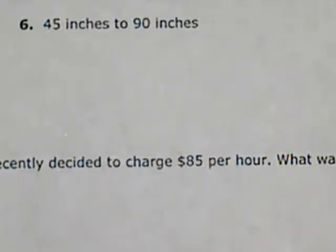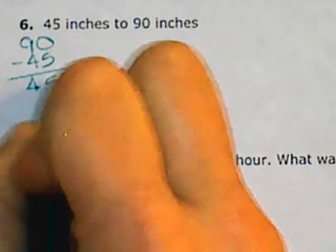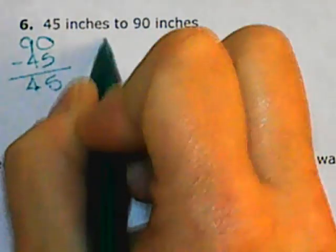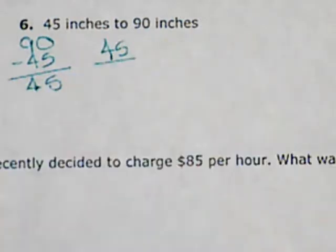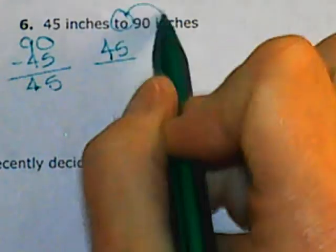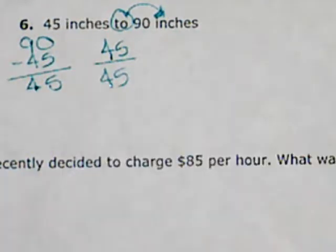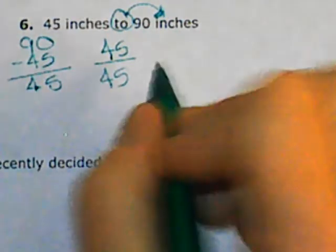Number 6: Take the old and the new and subtract the two. So I would take 90 minus 45, which gives me a difference of 45. Put it over the original. And remember, you go to the new. Therefore, 45 is the original.